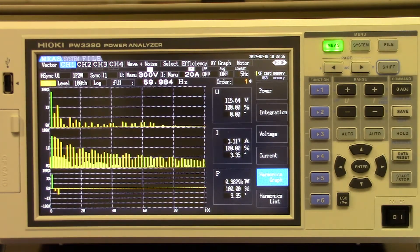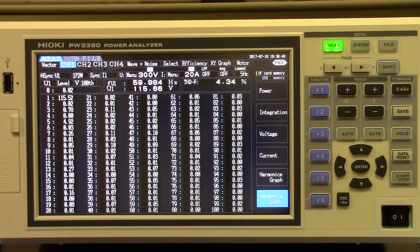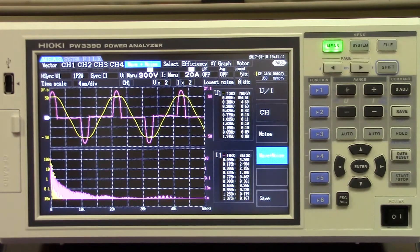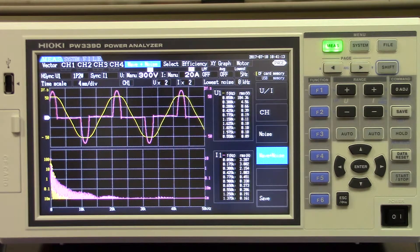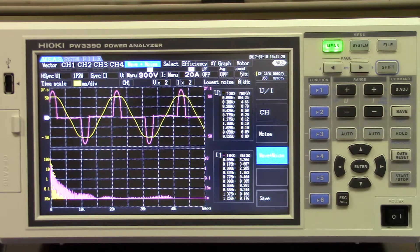Harmonics can also be viewed either in graphical format or in list format. A waveform and noise display screen is also available offering an opportunity to see the voltage and current waveforms and their noise characteristics together on the same screen.